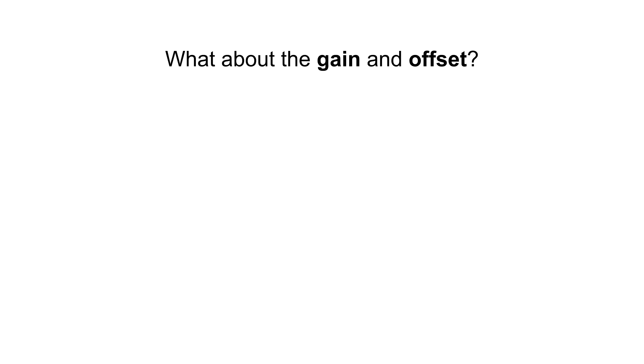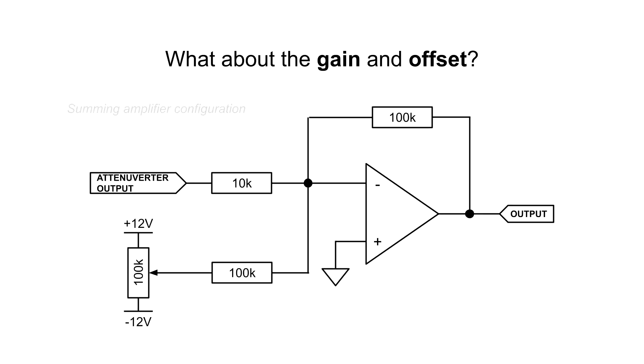But what about the gain and offset? To add this functionality, we just connect a summing amplifier to the output of the attenuverter. One leg of the summer has a DC offset of minus 2 to positive 12 volts with a gain of 1. The other leg has the attenuverter signal with a gain of 10.